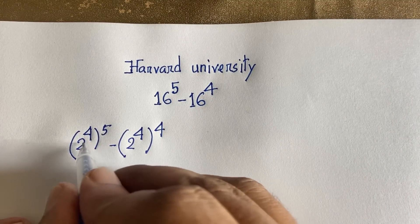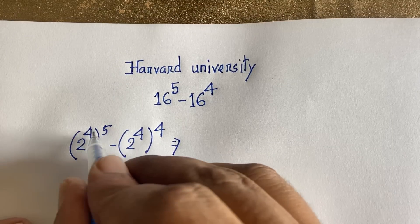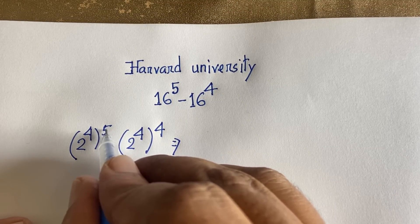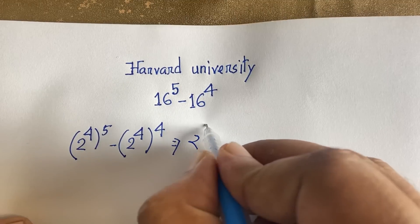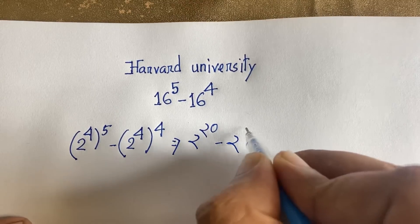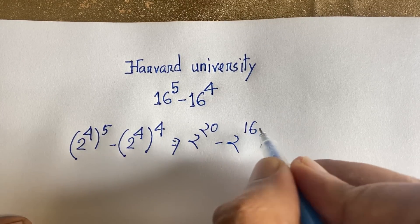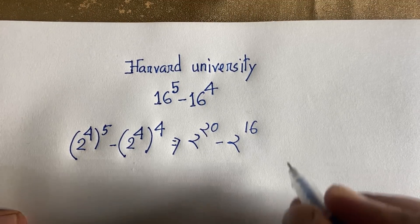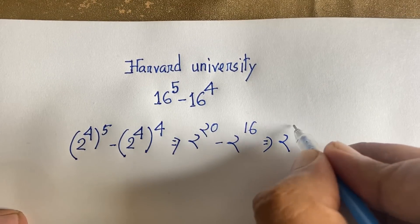Now, applying the exponential law: 2 to the power 4, whole to the power 5 gives 2 to the power 20, since 4 times 5 equals 20. And 2 to the power 4, whole to the power 4 gives 2 to the power 16, since 4 times 4 equals 16. So the expression becomes 2 to the power 20 minus 2 to the power 16.